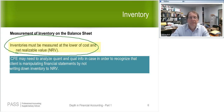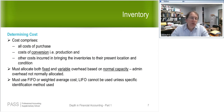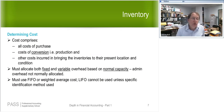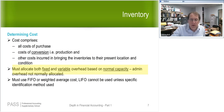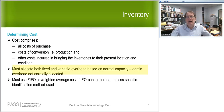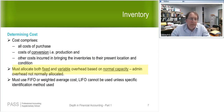Most people know this, just a couple of little twists. What do you capitalize into your inventory? It's going to be all your costs of purchase and conversion. You have to allocate fixed and variable overhead based on normal capacity. I understand that admin overhead is not normally allocated.